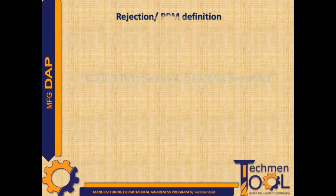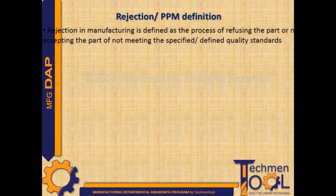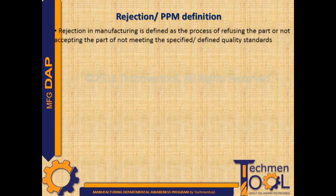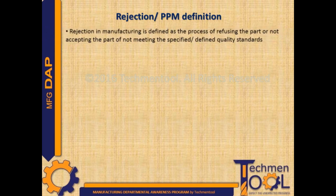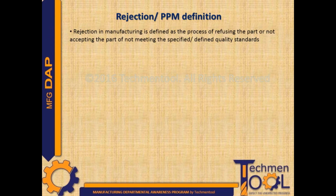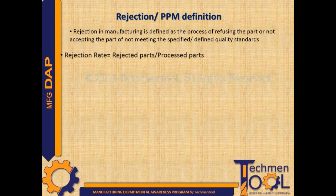Rejection in manufacturing is defined as the process of refusing or not accepting a part that does not meet the specified or defined quality standards.